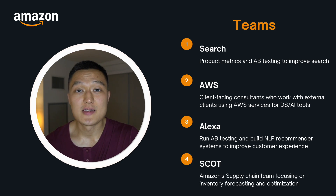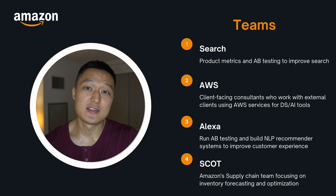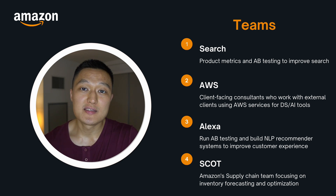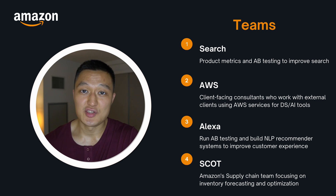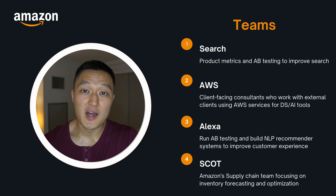The last team I want to briefly cover is the SCOT team. They focus on inventory forecasting and optimization, which is a crucial function — really the backbone of how Amazon.com supports millions of purchases, logistics, shipping and distribution. Keep in mind there are many more teams at Amazon beyond these four. Think about what type of projects you're interested in and seek out those specific teams.